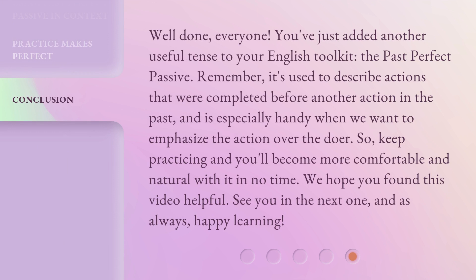Well done, everyone. You've just added another useful tense to your English toolkit — the past perfect passive. Remember, it's used to describe actions that were completed before another action in the past, and is especially handy when we want to emphasize the action over the doer. So keep practicing and you'll become more comfortable and natural with it. We hope you found this video helpful. See you in the next one, and as always, happy learning.